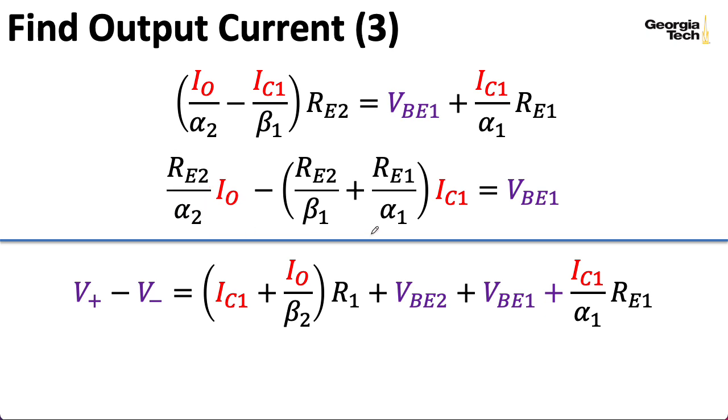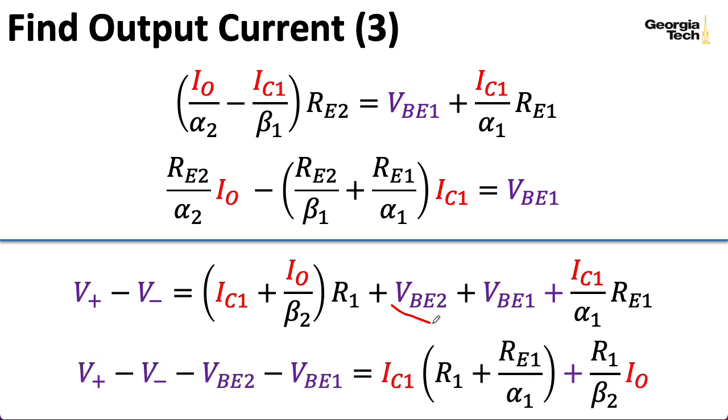So, for the equation on the bottom here, let me move this VBE2 plus VBE1 over to the other side. So, I wind up with some minuses here. And when I group the IC1 terms, let's see, I have R1. So, that goes here. And then I have RE1 over alpha1, which is here. And let's see. Then I also have this IO term. And that's R1 over beta2.